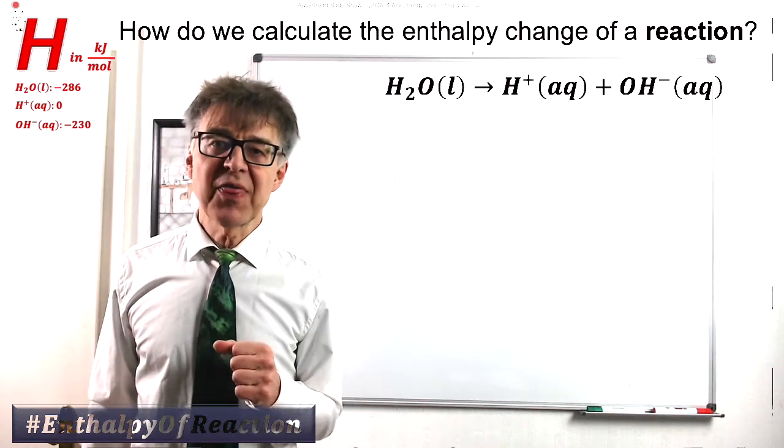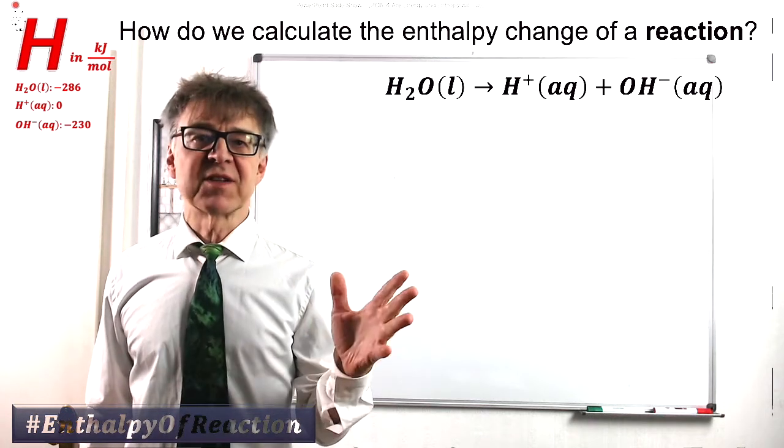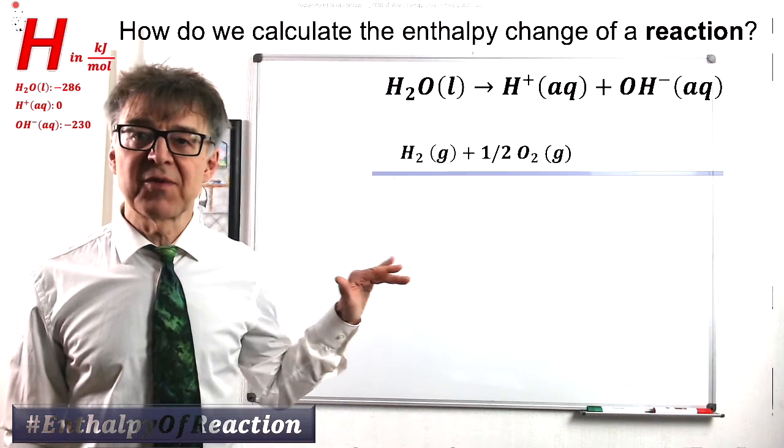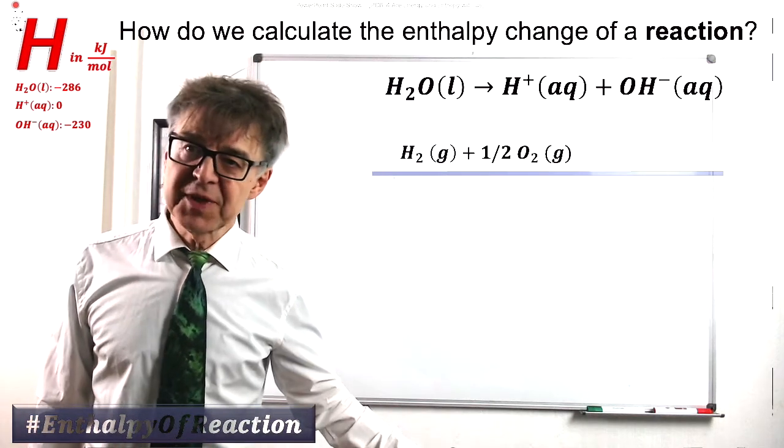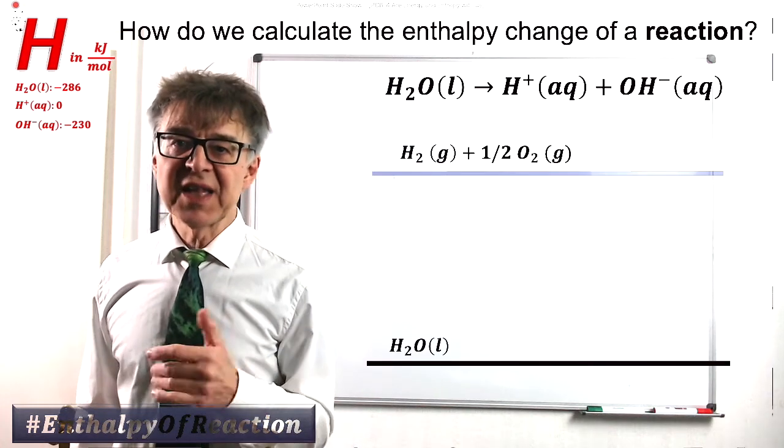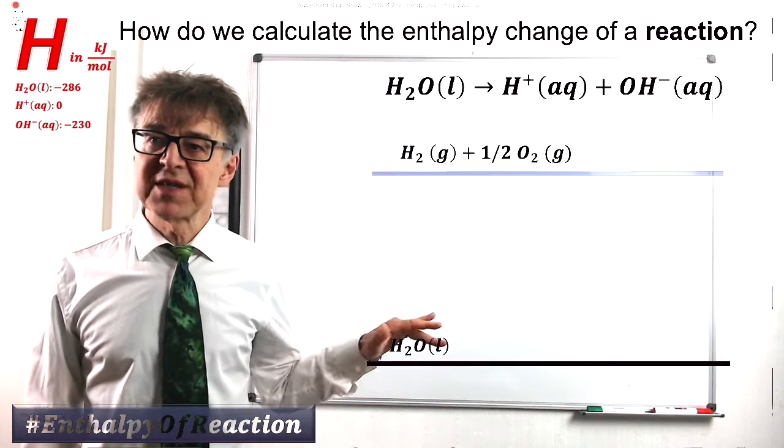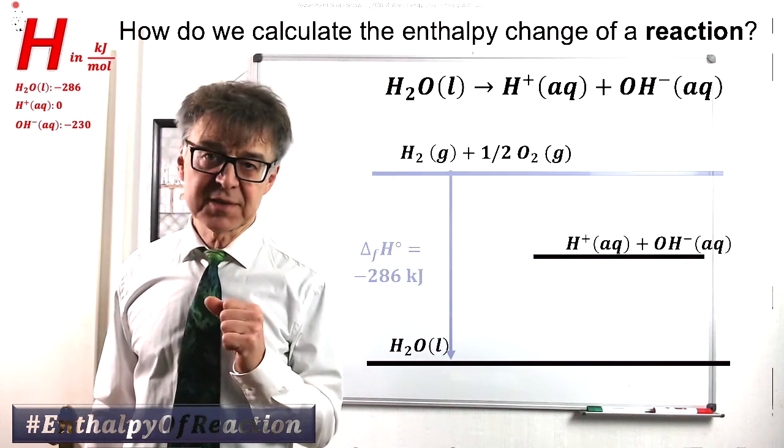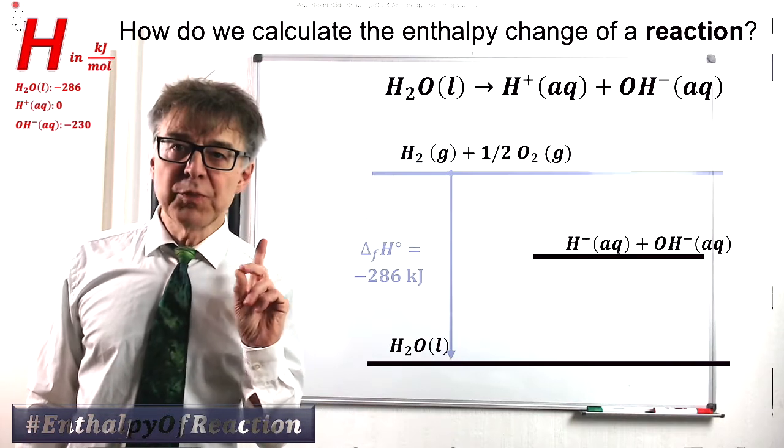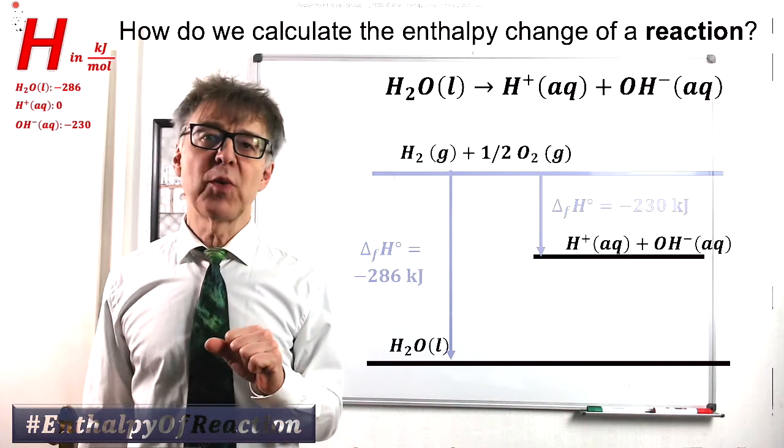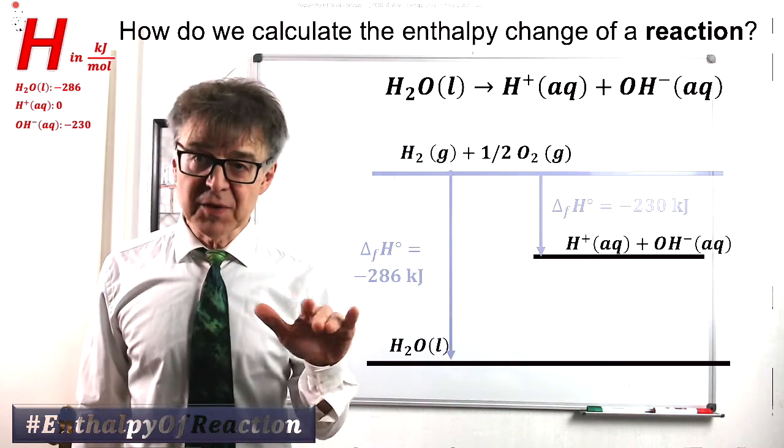The standard enthalpy of formation of any element in its most stable form is zero. At lower enthalpies we find the reactant water. And the enthalpy of the products H plus and OH minus is located between the aforementioned levels. The two blue arrows represent the enthalpy of formation. These arrows always start at zero level.